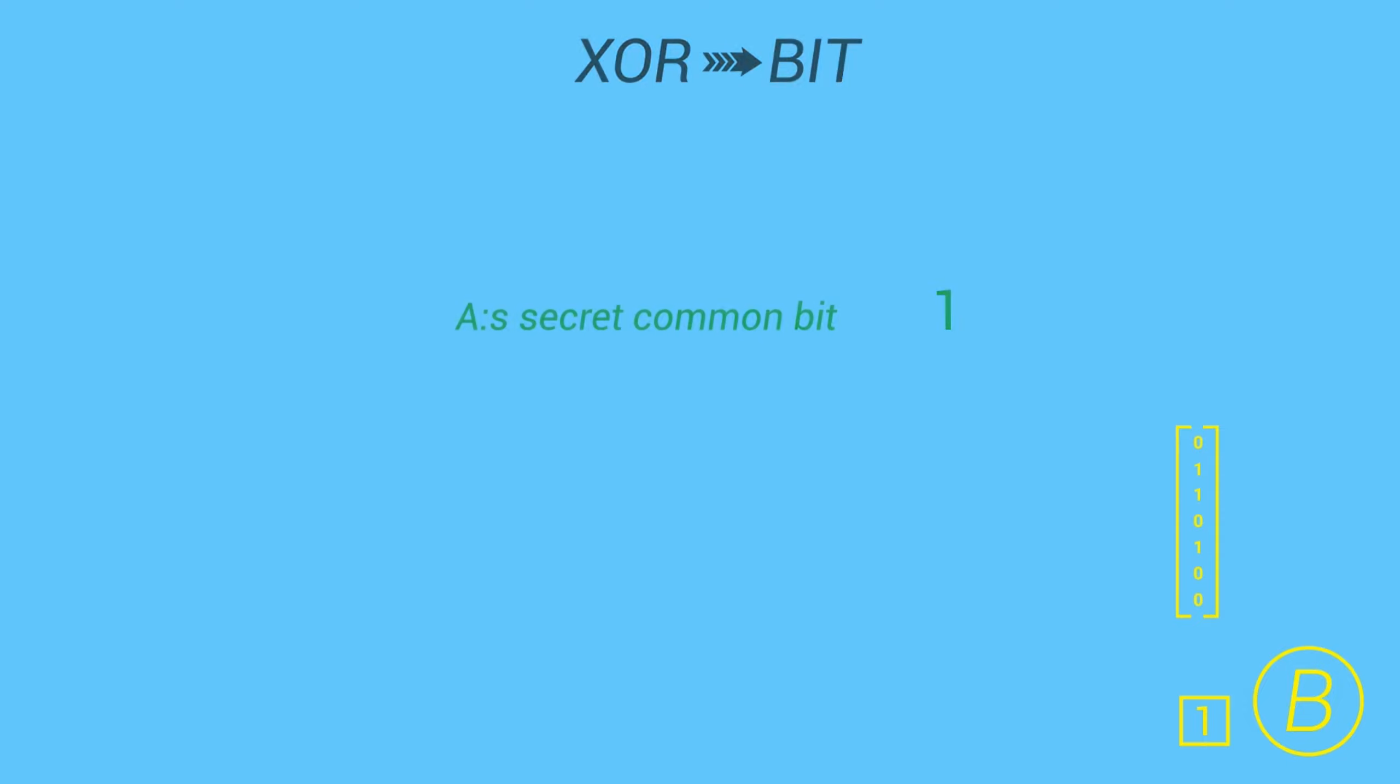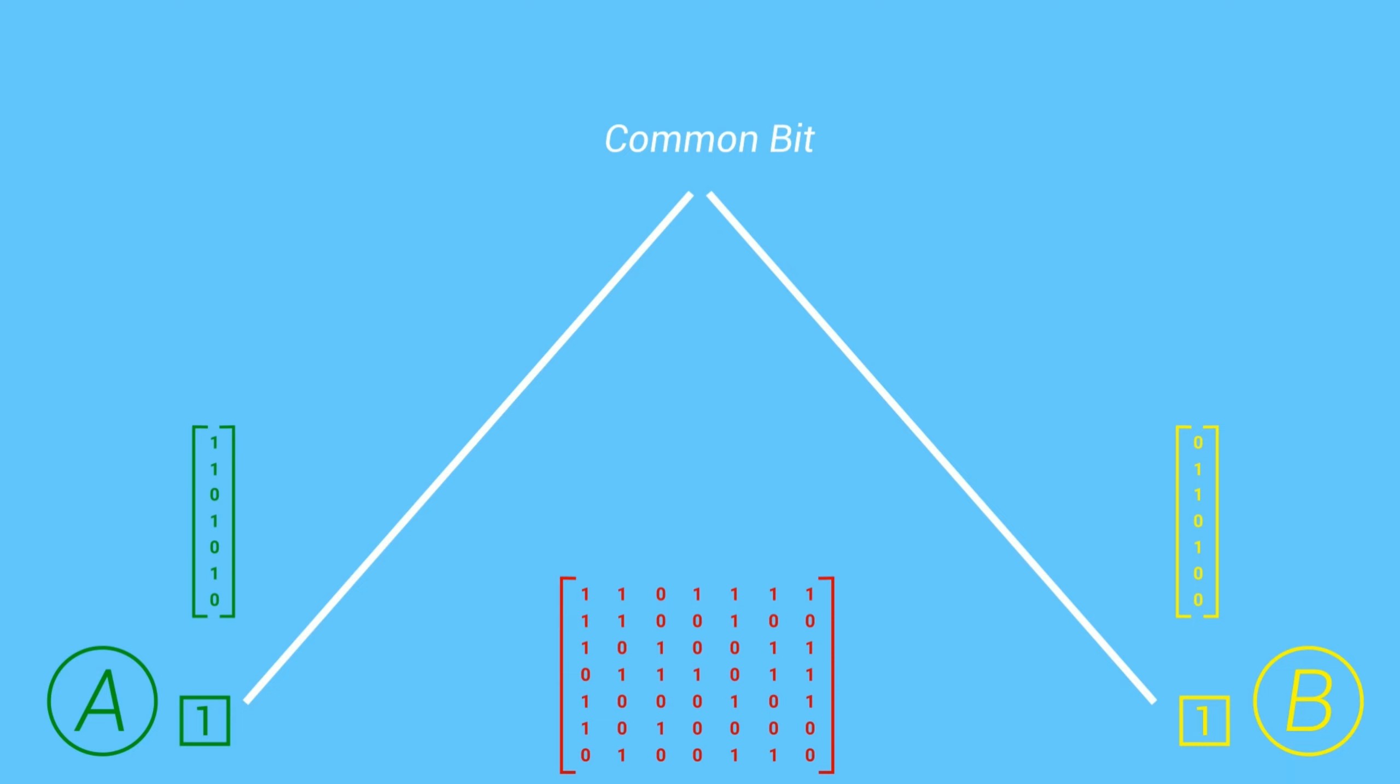The problem with such simple approach is that a man in the middle are able to use binary Gaussian elimination to algorithmically calculate the secret vectors from the result vectors and the matrix.